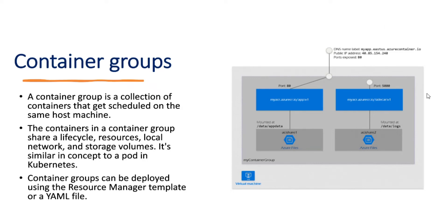Looking at the diagram: we have a common DNS name, and under it two containers are deployed — one running on port 80 and another on port 5000. They share file storage where log files are stored, and as you can see, both are running on the same host machine.